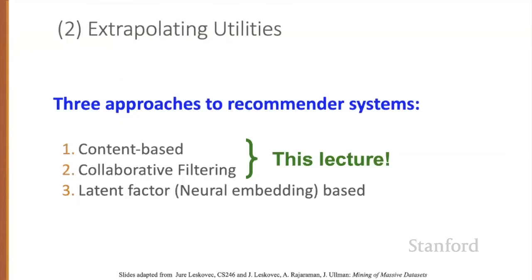There are three main approaches to recommender systems. We'll talk about content-based and collaborative filtering systems. We'll very briefly mention the more modern third architecture: latent systems based on neural embeddings.